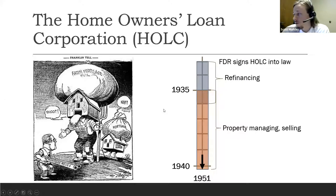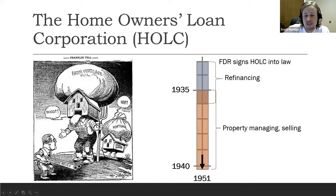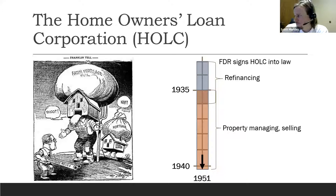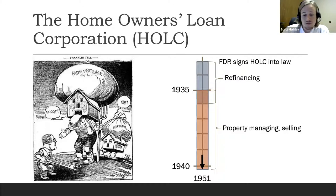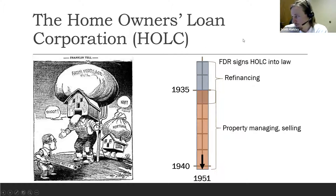The Homeowners Loan Corporation was signed into law in 1933, the first year of FDR's presidential administration. The purpose of the agency was initially to issue refinancing loans to struggling homeowners who were facing foreclosure. The idea was that through federal government assistance and insurance, the HOLC could reduce the monthly payment that struggling homeowners had to pay off to lenders.